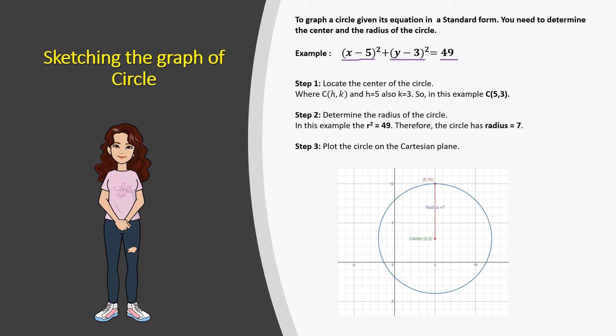We know that h and k are the coordinates for the center. From the equation, h is 5 and k is 3, so our center is (5, 3). Here you can see the center located on the graph.